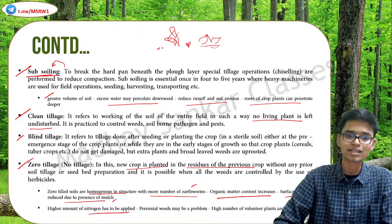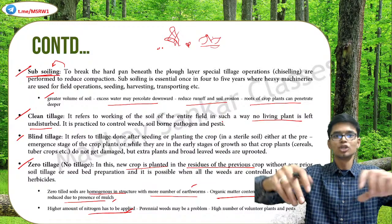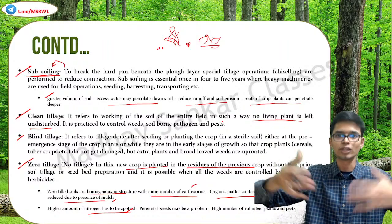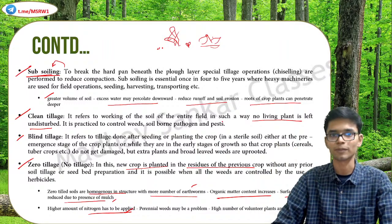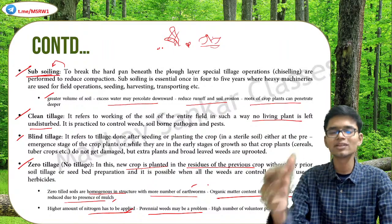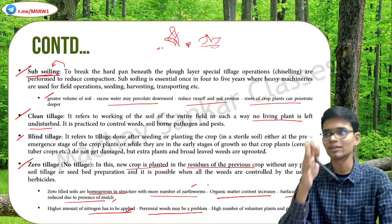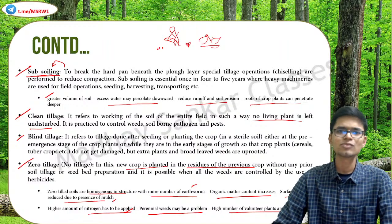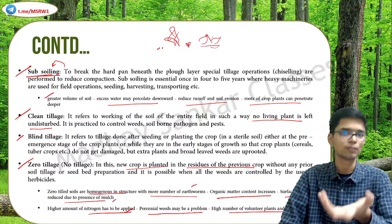The disadvantages of zero tillage: a higher amount of nitrogen has to be added — more artificial fertilizers are needed because you are not plowing or aerating the soil, so you must add artificial nutrients. Perennial weeds may be a problem — you either suffer through them or use more herbicides. A high number of volunteer plants — unwanted plants that grow without being intended — and pests are also problems in zero tillage, requiring more pesticide use due to the lack of tillage to control them.